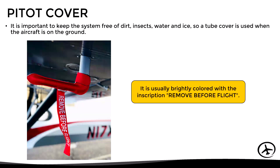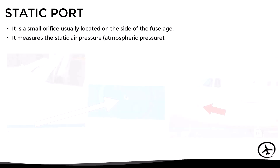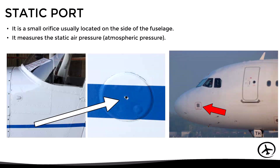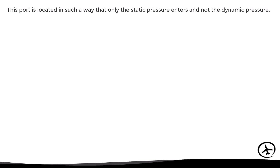To finish with the pitot tube: it is important to keep the system free of dirt, insects, and water, so on the ground a cover is used for this tube that is normally brightly colored and has the inscription 'remove before flight,' just to remind the pilot to remove the cover before flying — since otherwise there won't be any airspeed reading. Now let's move on to the other component of the system: the static port. This consists of a small hole, normally located on the side of the fuselage, and it measures the static pressure — in other words, the atmospheric pressure. This static port is located in such a way that only the static pressure is allowed to enter, and not the dynamic pressure.